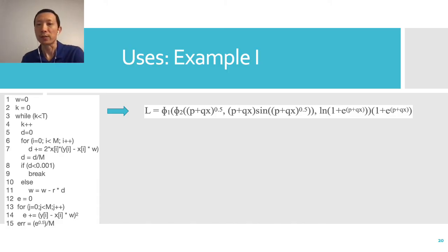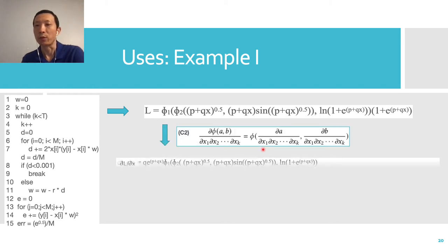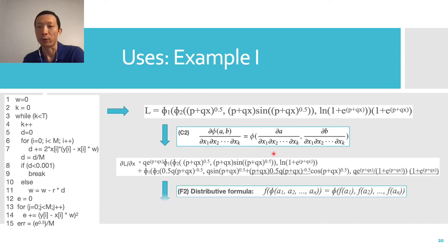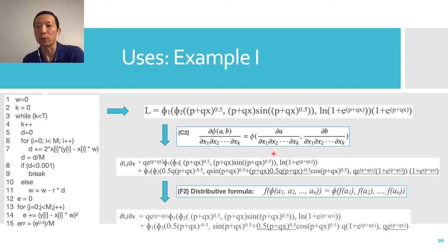Now let's see how the formulae can be used. We have seen that we can get this symbolic representation from this code. With corollary C2, we can easily compute the derivative of L over x by applying differentiation on each of the arguments of the phi function.